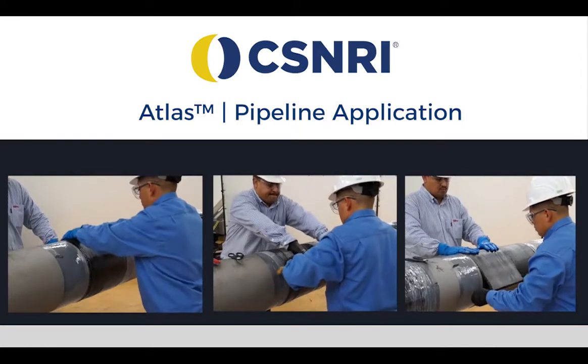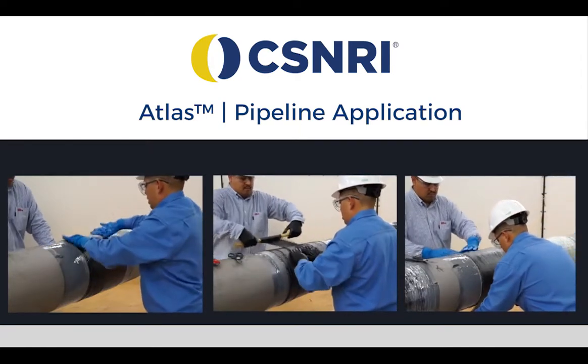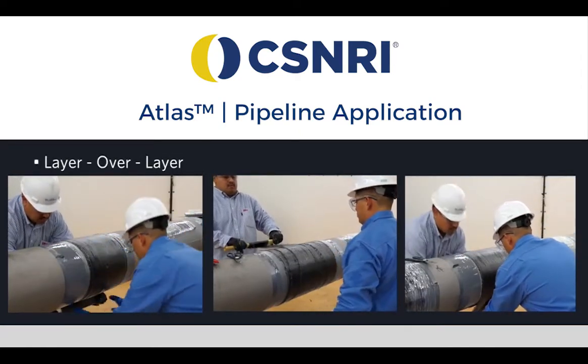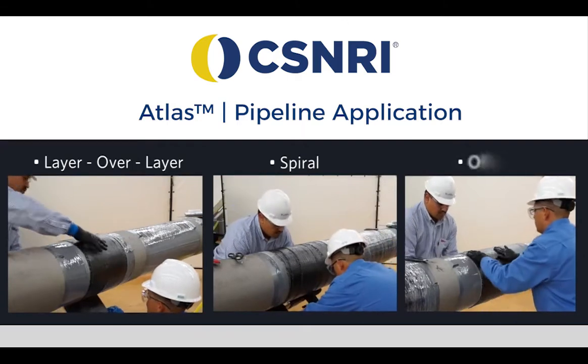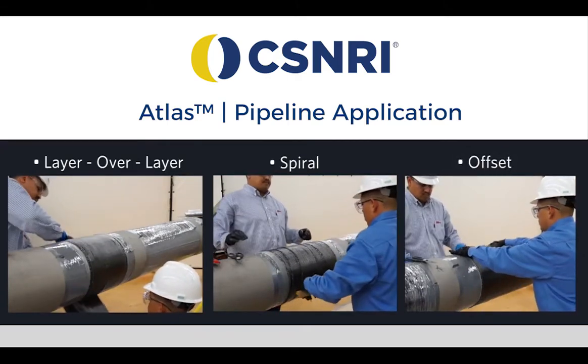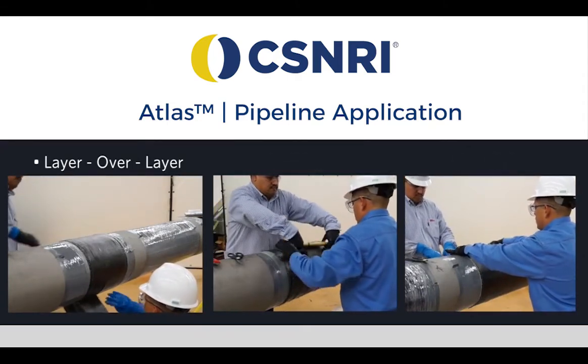There are three main methods to wrap the material on the pipe: layer over layer, spiral, and offset. In this video, we will focus on the layer over layer method.